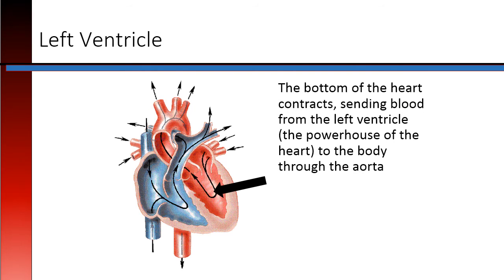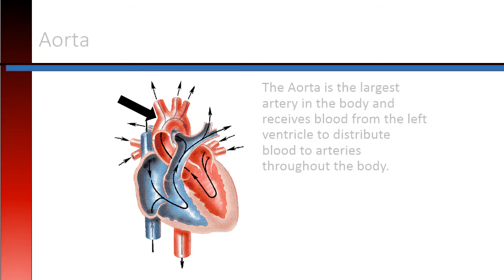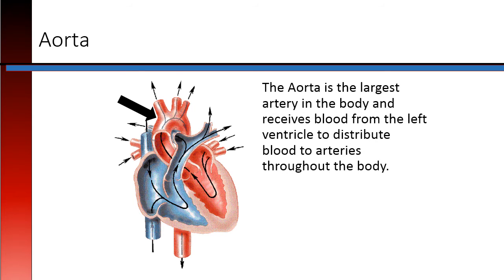Left ventricle: The bottom of the heart contracts, sending blood from the left ventricle — known as the powerhouse of the heart — to the body through the aorta. The aortic valve lies between the left ventricle and the aorta. The aorta is the largest artery in the body and receives blood from the left ventricle to distribute blood to arteries throughout the body.